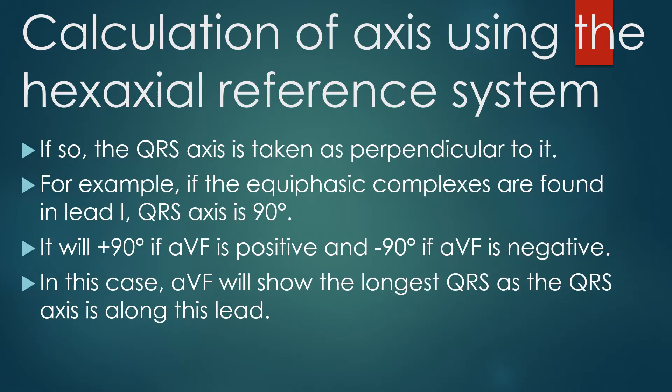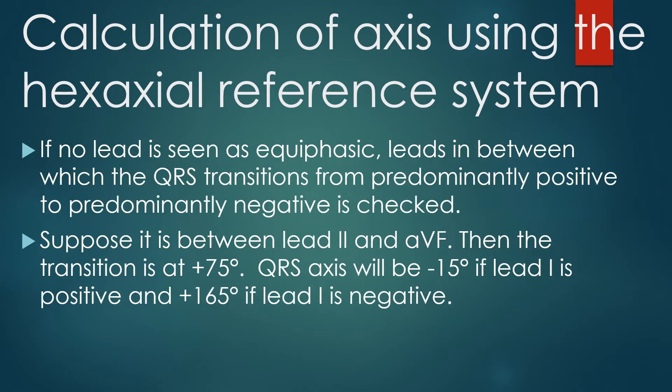If a lead shows equiphasic complexes, the QRS axis is taken as perpendicular to it. For example, if equiphasic complexes are found in lead 1, the QRS axis is 90 degrees — plus 90 degrees if AVF is positive, minus 90 degrees if AVF is negative. If no lead is equiphasic, the leads between which the QRS transitions from predominantly positive to predominantly negative are checked. If the transition is between lead 2 and AVF, the transition is at plus 75 degrees, and the QRS axis will be minus 15 degrees if lead 1 is positive, or plus 165 degrees if lead 1 is negative.